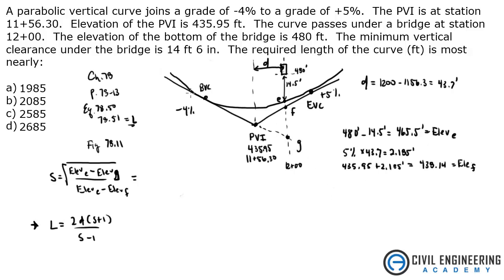Next thing we need to do is get G. We know we're going down 4%, and we're going that same distance. So what's 4% times 43.7? That gives me 1.748 feet. We're going to take 435.95 and subtract 1.748 feet. And that gives us 434.2. That's elevation of G.